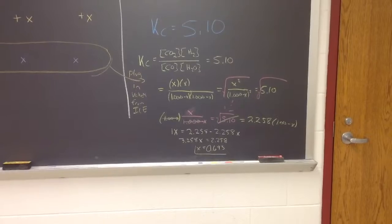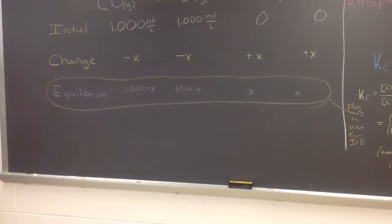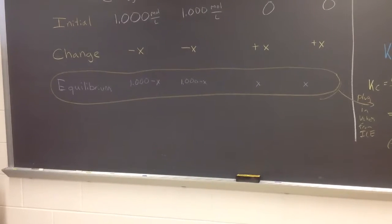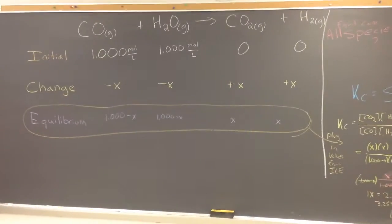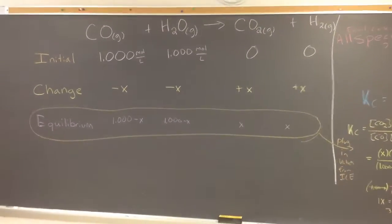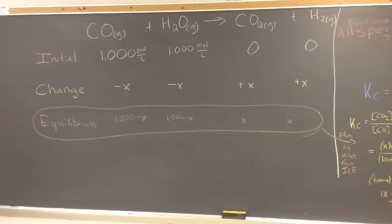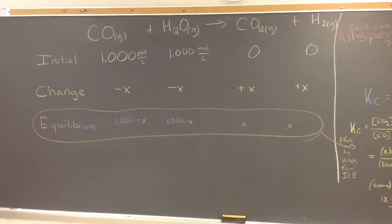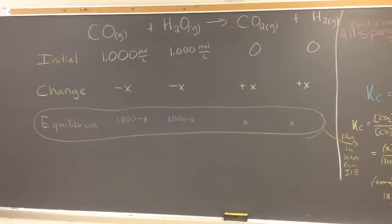Now we're not done yet. We wanted to know the equilibrium concentrations of everything. So we need to fill in our X, right? And so in this case, it's easy to see that the products should both be about 0.693 moles per liter, and the reactants here will be a little bit more than 0.3 moles per liter, actually 0.307 moles per liter.